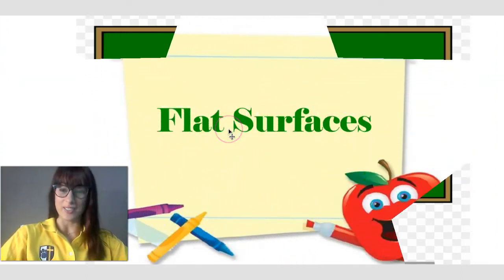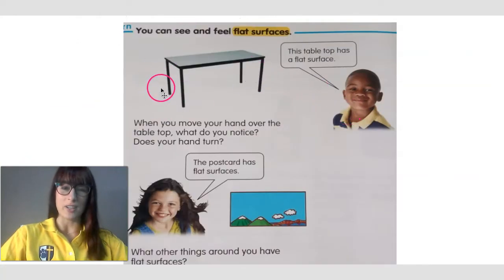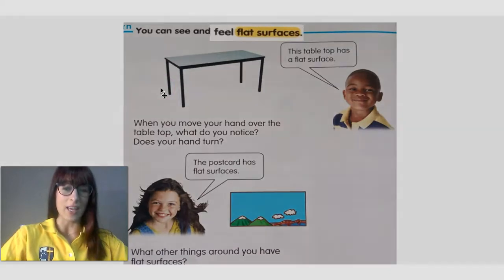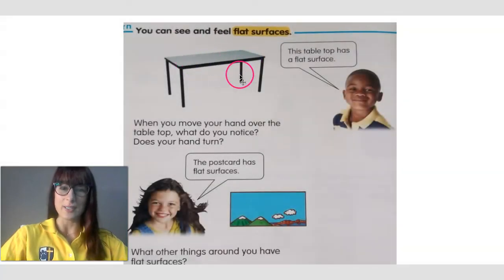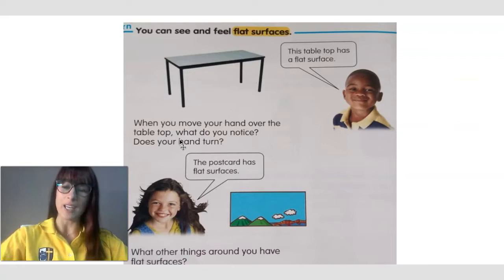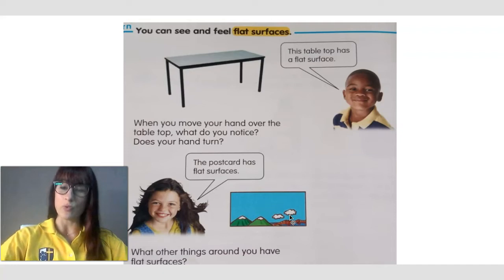We will begin with flat surfaces. When you look at this picture right here, you can see and feel flat surfaces. This table right here has a flat surface because when you move your hand over the table top, your hand will not turn — your hand will be in a flat position. The same thing happens with this postcard: your hand will move straight over the top and your fingers will not bend. That is also an example of a flat surface.